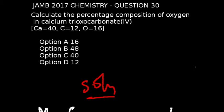JAMB 2017 chemistry exam, question number 30 is what we're looking at. Calculate the percentage composition of oxygen in calcium trioxocarbonate(IV).